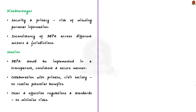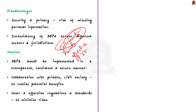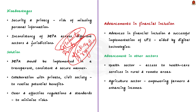To realize DEPA's potential benefits and minimize risks, it should be implemented in a transparent, consistent and secure manner. The government can collaborate with the private sector, civil society and other stakeholders. India has made advances in financial inclusion and successful implementation of UPI, aided by digital technologies. The question is whether these advancements can be replicated in other areas like health and agriculture. Digital technologies can enhance access to healthcare services particularly in rural areas, and in agriculture can empower farmers and enhance their incomes.